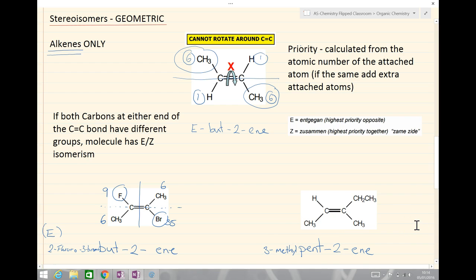Now, we need to look at whether it shows E, Z isomerism. We look at the left-hand side, two attached groups are different. The right-hand side, the two attached groups are different. So, now we need to look at the priority.